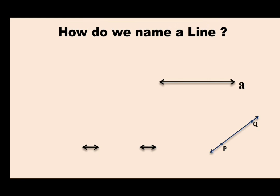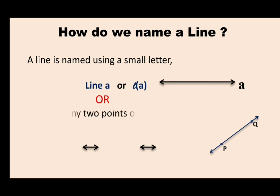How do we name a line? We can name a line by two ways. A line is named using a small letter, where you can see here small letter a. And it can be written like line a, or it can also be written by using any two points on the line.